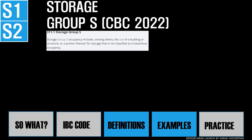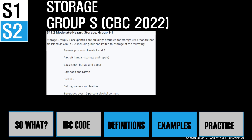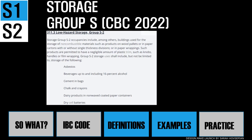The next category is storage group S occupancy — storage spaces not classified under hazardous occupancy. There are two subgroups, similar to F occupancy: S1 for moderate hazard and S2 for low hazard. Storage group S1 includes aerosol products, beverages, and a whole list of items. Storage group S2 includes non-combustible materials such as products on wood pallets or in paper cartons, asbestos, cement in bags, electrical motors, and food products. The distinction between S1 and S2 is whether the products are combustible or not.